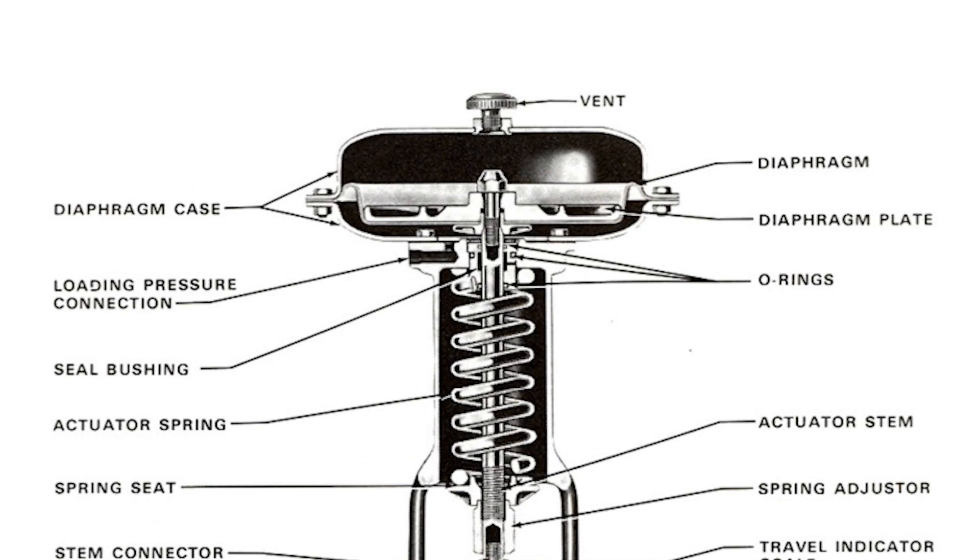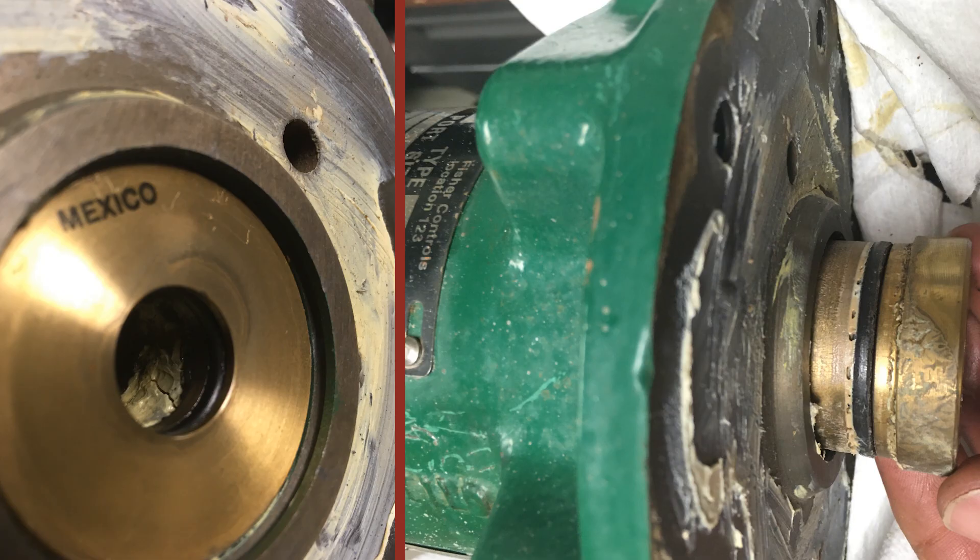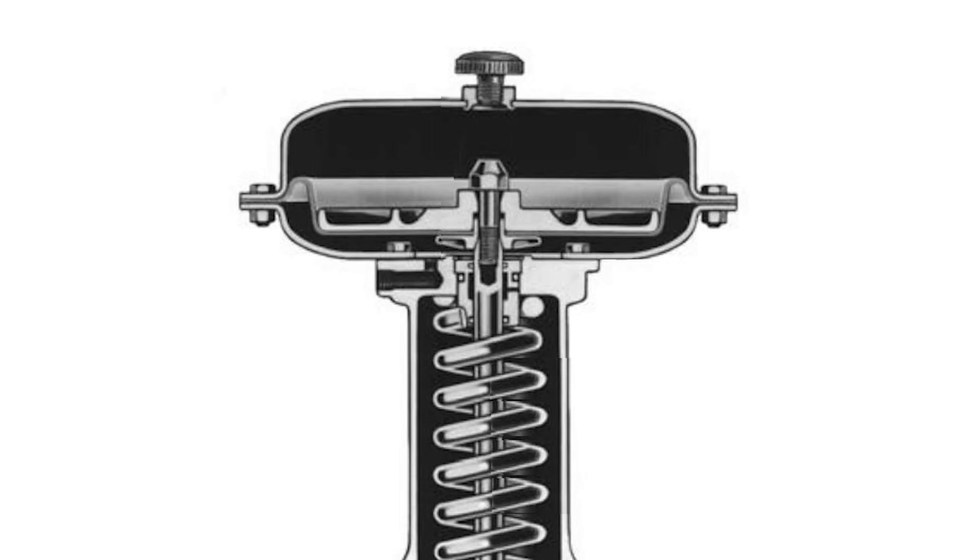On reverse acting actuators, there are three O-rings that are used to isolate the actuator diaphragm chamber from the spring chamber. If one of these O-rings fail, air will be allowed to leak into the spring chamber.